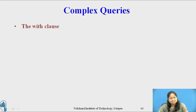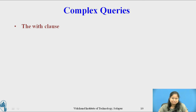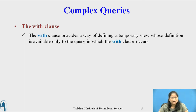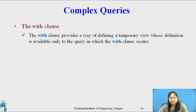Complex queries are much easier to write and understand if we structure them by breaking them into smaller views that we then combine, just as we structure programs by breaking their tasks into procedures. Now consider the WITH clause. Unlike a procedure definition, a CREATE VIEW clause creates a view definition in the database, and the view definition stays until a DROP VIEW command is executed. The WITH clause provides a way of defining a temporary view whose definition is available only to the query in which the WITH clause occurs.